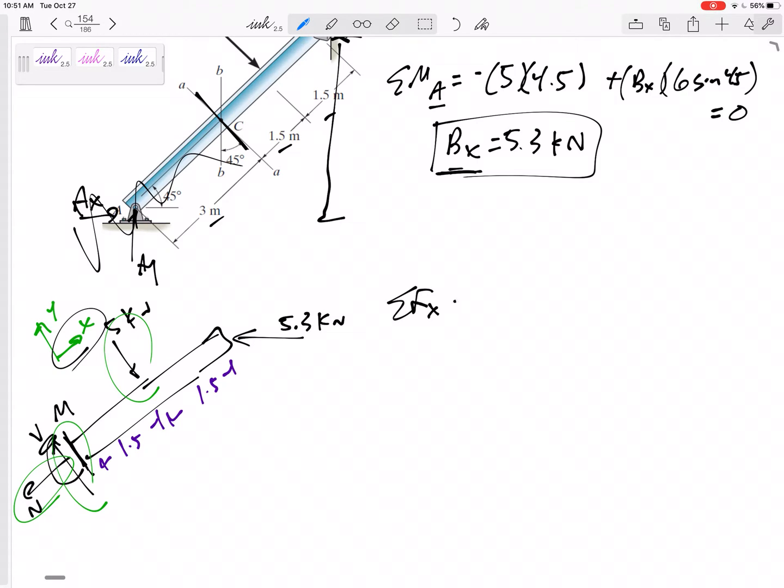Summing the forces in that X would be negative N and then here I need that component. Now that's 45 degrees. All right so this would also be negative 5.3 cosine 45 equals zero so N negative 3.75 kilonewtons. Box that in. All right box that in.